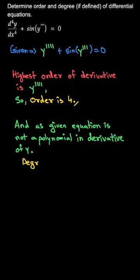If you try to write it as y''' equals sin⁻¹(y⁽⁴⁾), you have that inverse, because of which your equation will not be a polynomial in terms of derivatives of y. Hence, degree is not defined.